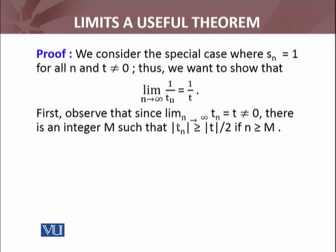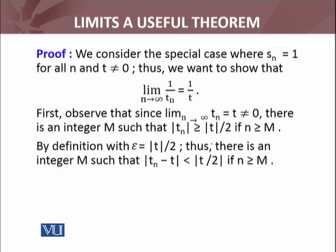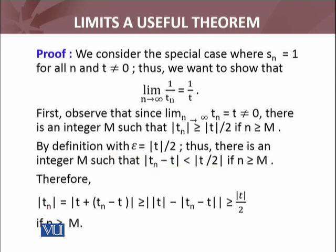Since the limit of Tn equals T and T is not equal to zero, there is an integer M such that |Tn| is greater than or equal to |T|/2 for all n greater than or equal to M. This follows from the definition of convergence: we take epsilon equal to |T|/2, and by convergence there exists an integer M such that |Tn - T| < |T|/2 for n ≥ M.